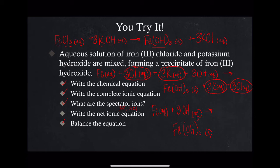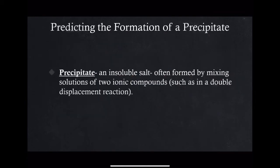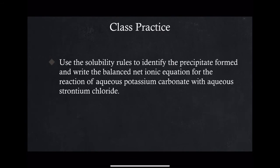You should also notice that the net ionic equation is balanced. And that's how you complete these problems — they are a little bit lengthy. So just to take down in your notes: a precipitate is an insoluble salt. A salt is just an ionic compound with a positive charge and a negative charge, a cation and an anion. Precipitates are often formed by mixing two aqueous solutions of ionic compounds and are frequently seen in double displacement reactions. All of the reactions we have done today have been double displacement reactions.